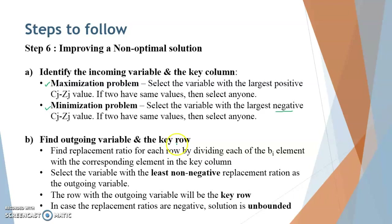After identifying the incoming variable, we find the outgoing variable and the key row, also called the pivot row. Calculate the replacement ratios for each row by dividing each Bi element — which is the solution value on the right-hand side of your equations — by the corresponding element in the key column. Then select the variable with the least non-negative replacement ratio as the outgoing variable, and its row is the key row.